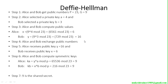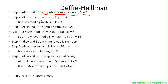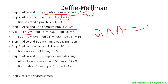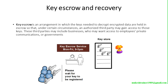Diffie-Hellman is a very important key exchange method. Alice and Bob agree on public numbers P = 23 and G = 9. Alice selects private key A = 4 and Bob selects B = 3. Alice and Bob compute their public values — for example, X = G^A mod P = 9^4 mod 23 — and use these to derive a shared secret. Spend more time with this method.